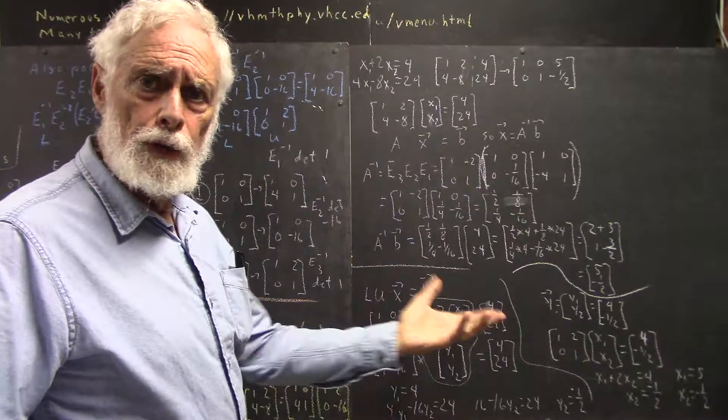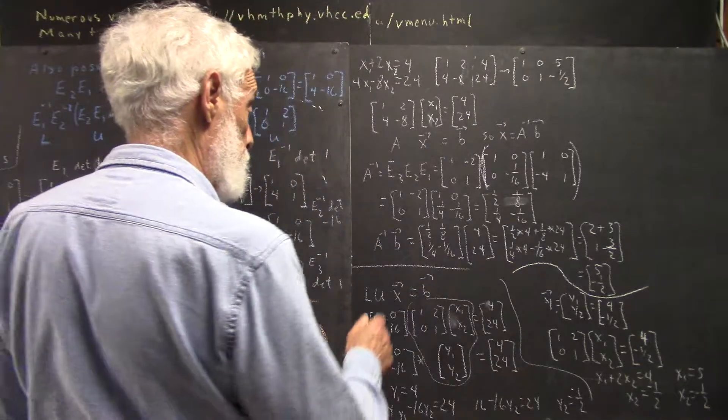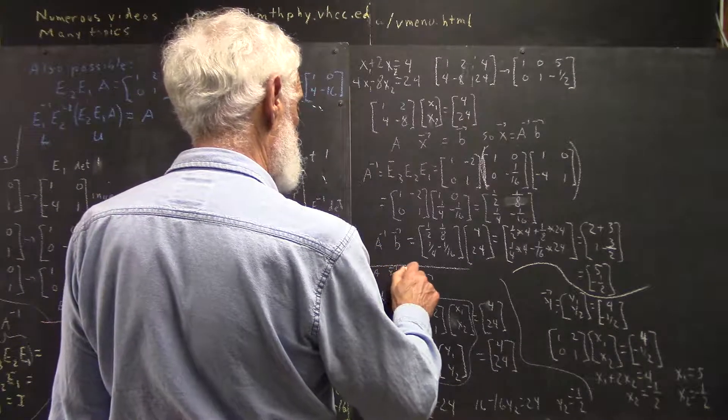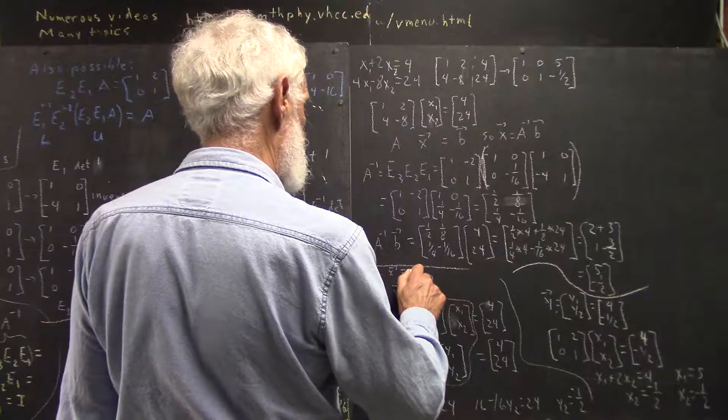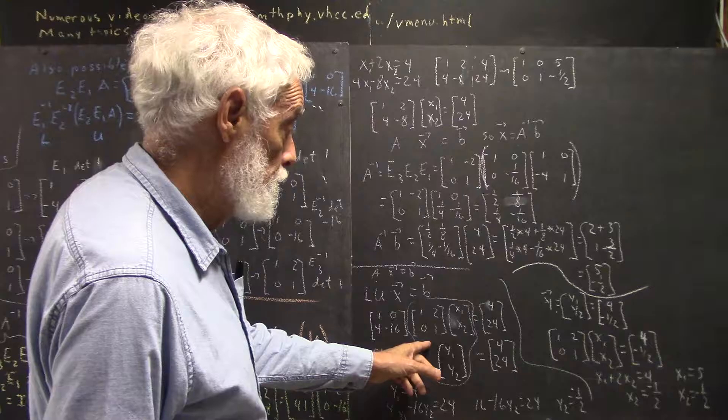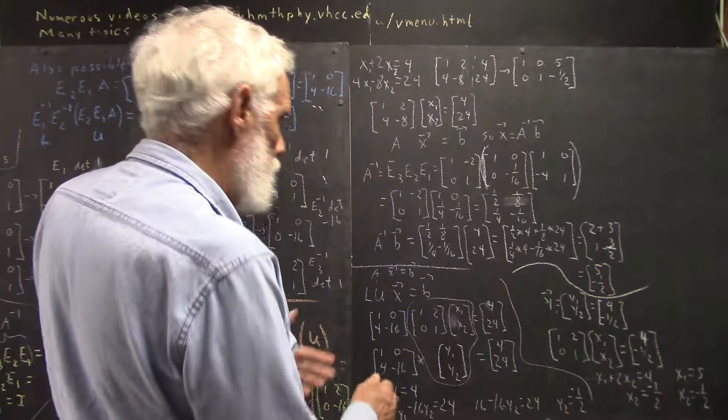Now, how do we solve this using LU? Well, LU times our X equals B, because LU equals A. So, AX equals B. We replace A with LU.